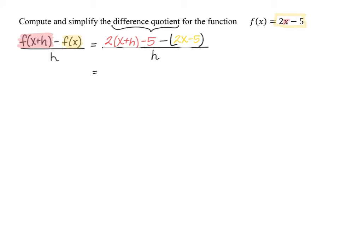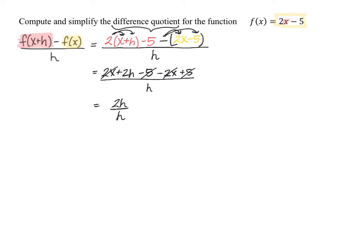Now the rest is just simplifying. We distribute to get 2x plus 2h minus 5, then distribute the negative to get negative 2x plus 5, all divided by h. Simplifying, the 2x's cancel out, and the negative 5 and positive 5 cancel out. We're left with 2h divided by h, which gives us a final answer of 2.